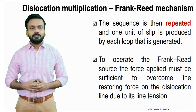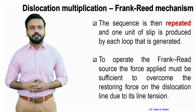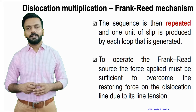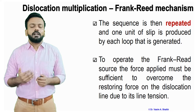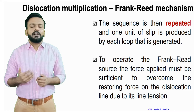The sequence is repeated: one unit of slip is produced by each loop and it keeps generating itself. To operate the Frank-Reed source, the force applied must be sufficient to overcome the restoring force on the dislocation line, which is due to the line tension. So you cannot expect a dislocation to multiply by keeping the stress constant.